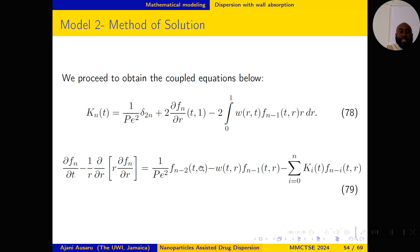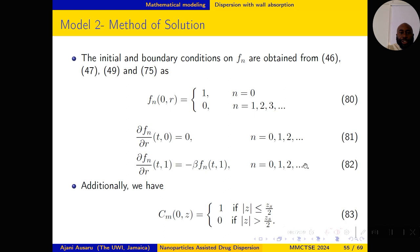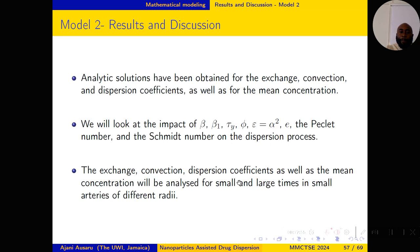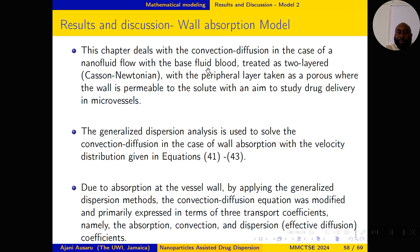According to Gill-Sankar, the solution to equation 44 is given by equation 77. This time we start at n equals 0, since previously — with no absorption — we started at n equals 1. We proceed as in Model 1 with coupled equations for the KNs and FNs with accompanying boundary and initial conditions. This time we have an expression for the mean concentration in terms of three transport coefficients: K0 as the absorption coefficient, K1 as the convection coefficient, and K2 as the dispersion coefficient. In summary, this chapter deals with convection-diffusion in a nanofluid base with blood, a two-layered Casson-Newtonian model, with the peripheral layer as a porous region, to study drug delivery in microvessels using the generalized dispersion model of Gill and Sankar-Subramanian (1970).